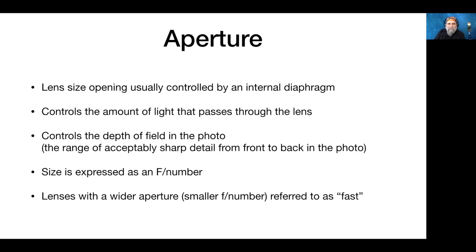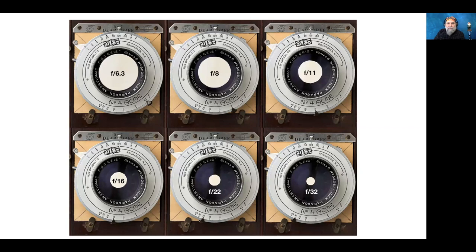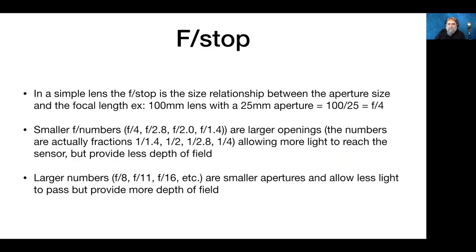We use the term f-stop to talk about the different aperture sizes. The f-stop is the size relationship between the aperture and the focal length. For example, a 100mm lens with a 25mm aperture: 100 divided by 25 is f4. If the aperture were 50mm: 100 divided by 50 is f2. The smaller numbers — f4, f2.8, f2, f1.4 — are the larger openings because they're actually fractions, allowing more light. Larger numbers like f8, f11, f16 are smaller apertures allowing less light.